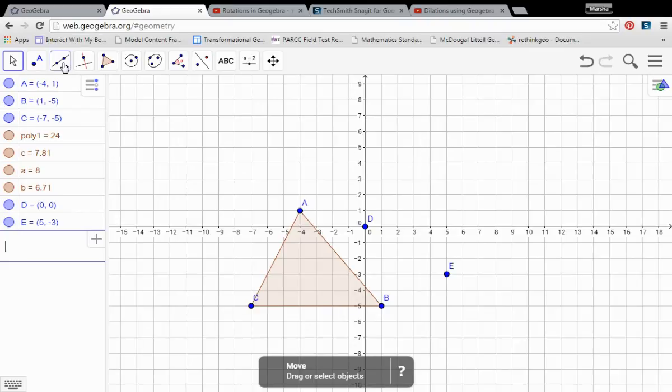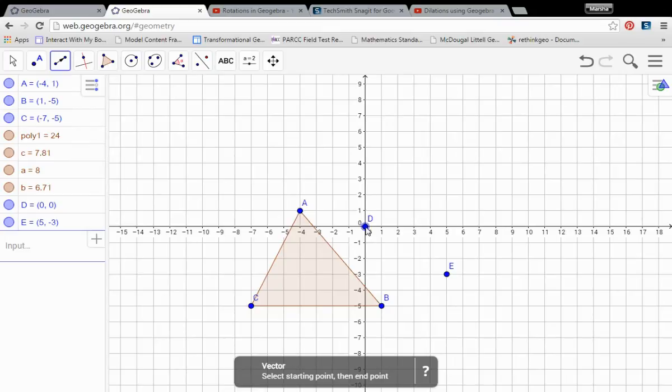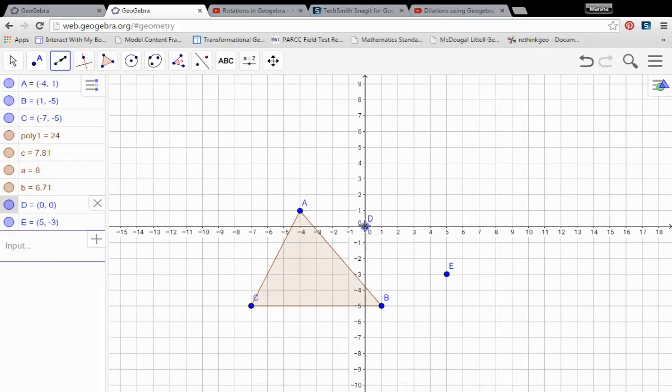Then we're going to use our vector tool. Go up here into the line menu, choose vector. And the order in which you select the points is going to determine which direction you want it to move. Here I want it to move from D to E. Clicking on both points creates that vector.